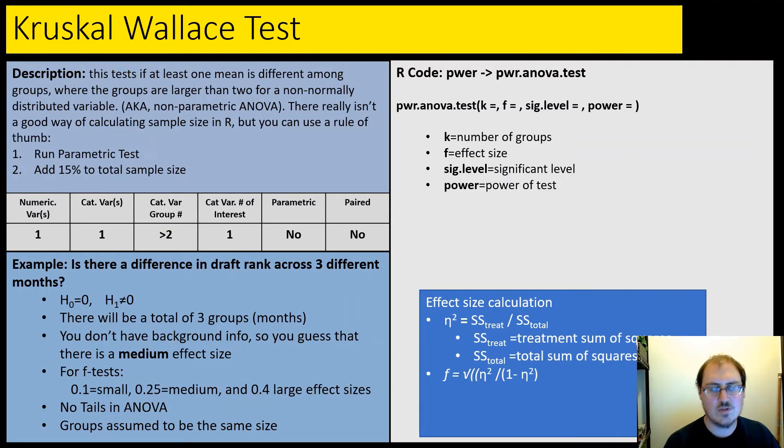Next, we have the Kruskal-Wallis test, which is the non-parametric analog to ANOVA. And again, in R, there really isn't a good way of doing this. So we're going to again do the parametric test plus 15% like we did for the t-tests. So the actual R code is going to be again the ANOVA test, so nothing new here. Number of groups, effect size, significance level, and power.